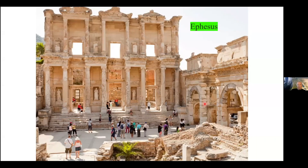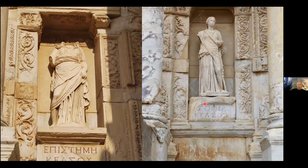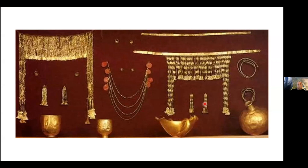Much of what you know about Greece is actually located in Turkey today — like the beautiful Library of Ephesus, a remarkable architectural masterpiece over two thousand years old with beautiful sculptures and carvings. Even the story of Troy — the Trojan Horse — actually takes place in Turkey. This is where Schliemann found the wonderful jewelry believed to be that of Helen of Troy.